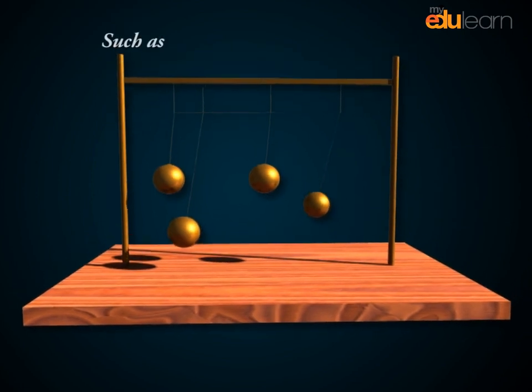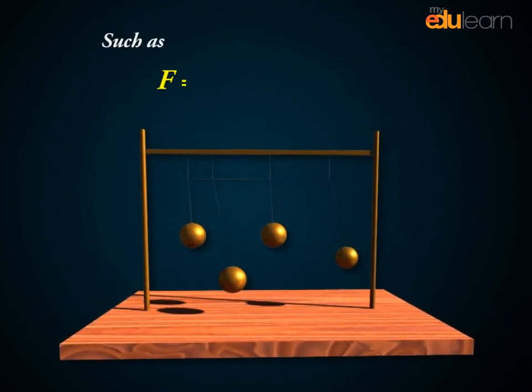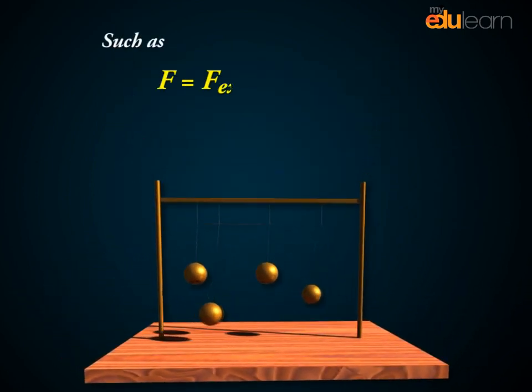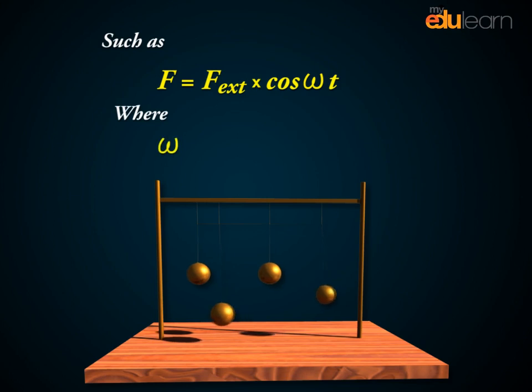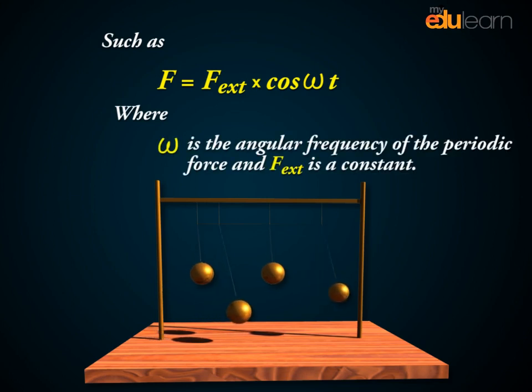Such as F equals F external times cos omega t, where omega is the angular frequency of the periodic force and F external is a constant.